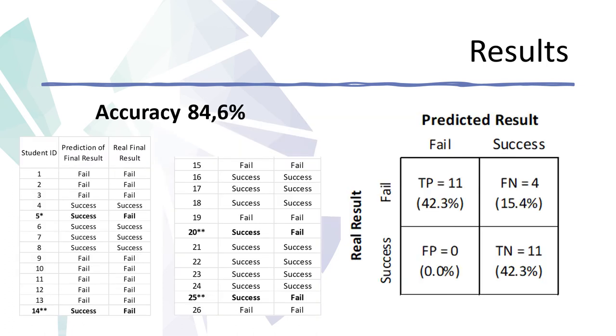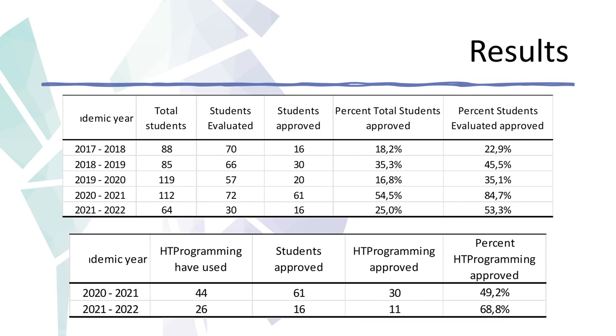With accuracy of 84%, the results obtained using the predict model are very encouraging. The results of the introductory programming course point to an improvement in the order of 75% of students approved.